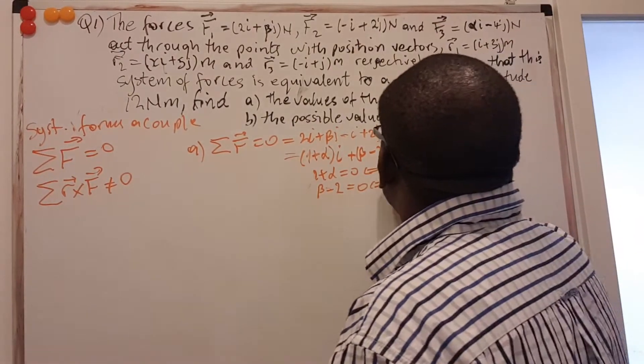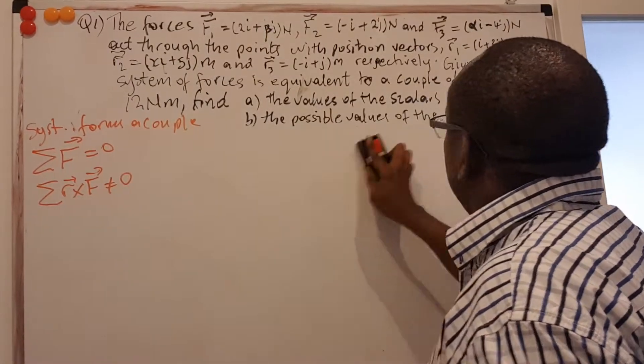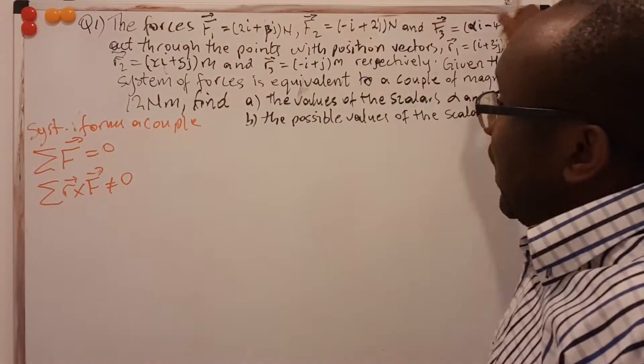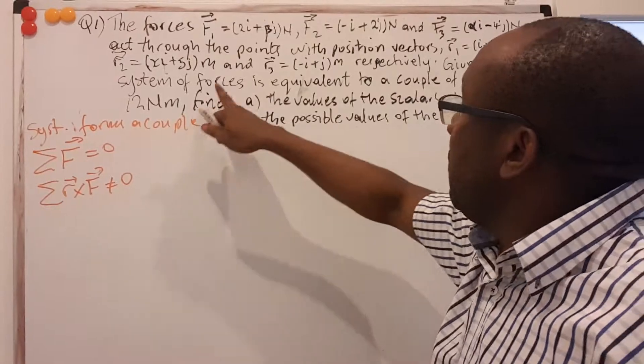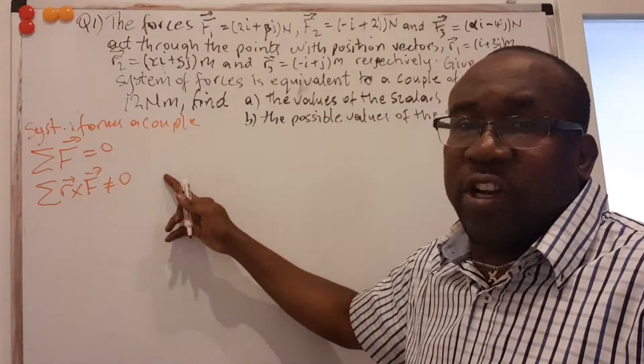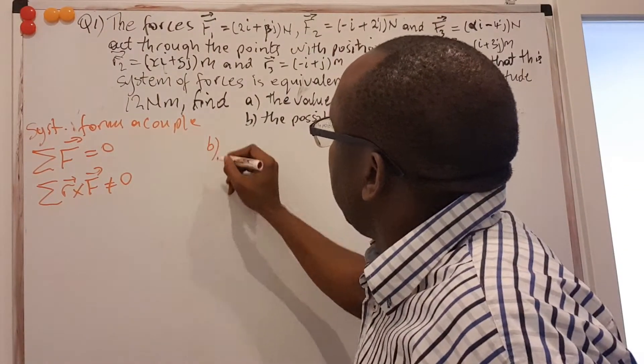Let's go to the B part. The first part was done using only the forces. But now the second one says something about the position vector. So the only next equation I know with position vector is this one. So I'm going to use that.